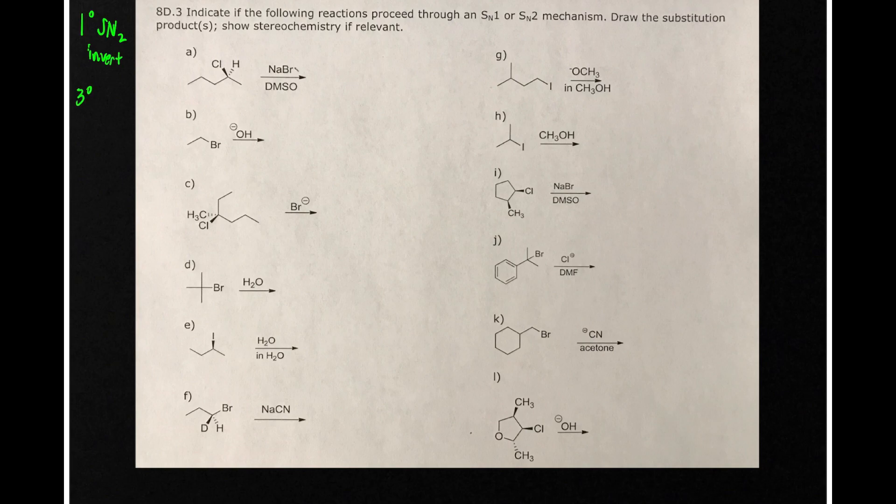If it's tertiary, we know it must be SN1, and we draw the racemic reaction products. That means both.